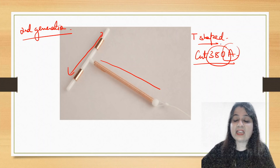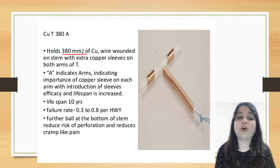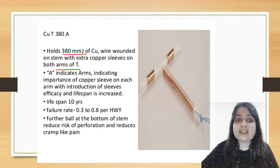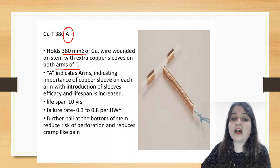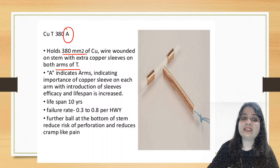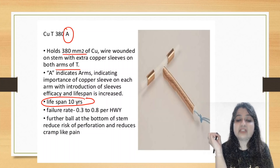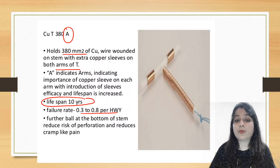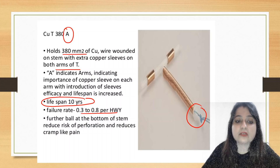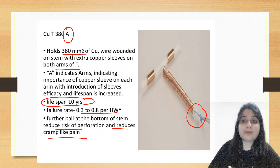What does '380' mean? 380 millimeter square of copper wire is wound on the stems, with extra copper sleeves on both arms of the T. 'A' indicates the arms and also indicates size — A, B, C, D, with D being the biggest size. The lifespan of Copper T380A is 10 years and the failure rate is 0.3 to 0.8 per 100 woman-years. There is a ball at the bottom of the stem which reduces the risk of perforation and reduces cramp-like pain.